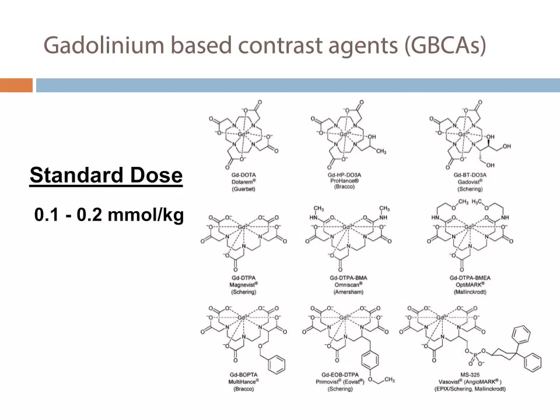Several of the most common gadolinium-based contrast agents are demonstrated on this slide. Each individual contrast agent is made up of the gadolinium 3-plus ion surrounded by an organic compound known as the chelating agent. These compounds are typically administered in a standard dose for imaging purposes, somewhere in the range of 0.1 to 0.2 millimoles per kilogram.